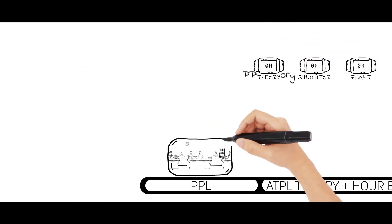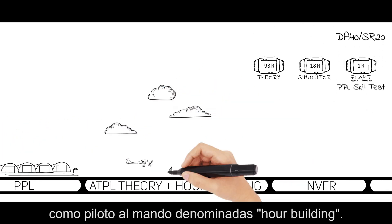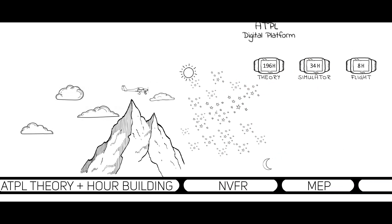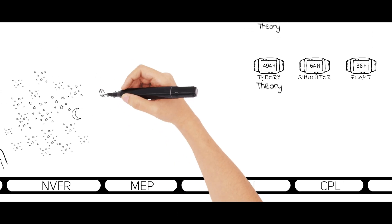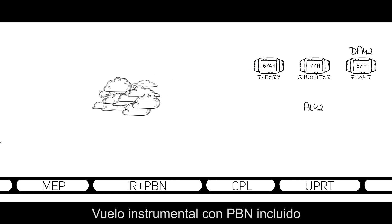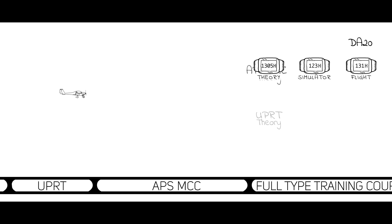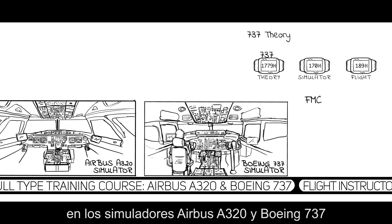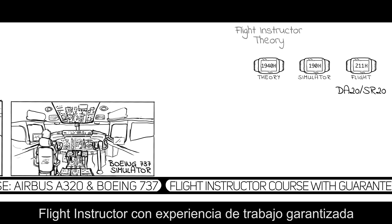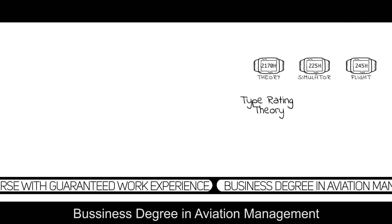The course is made up of several phases: private pilot course, ATPL theory course along with all the required hours as pilot in command, known as hour building, night visual flight, multi-engine flight, instrument flight with PBN, commercial pilot's license, UPRT, APS MCC, our unique full type training course in Airbus A320 and Boeing 737 simulators, flight instructor course with guaranteed work experience, and a business degree in aviation management.